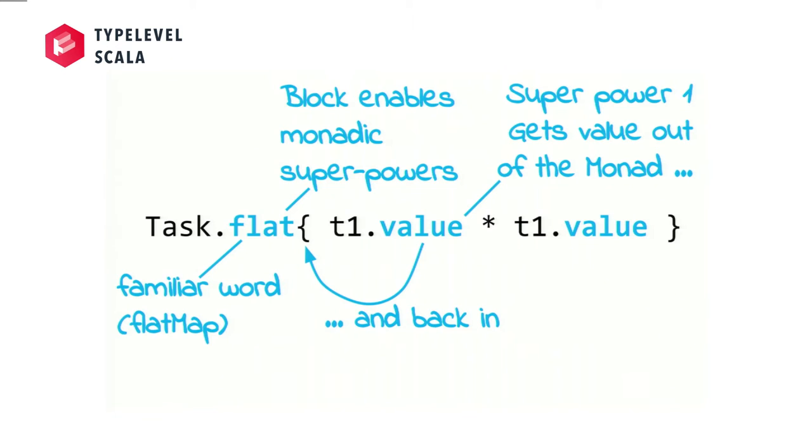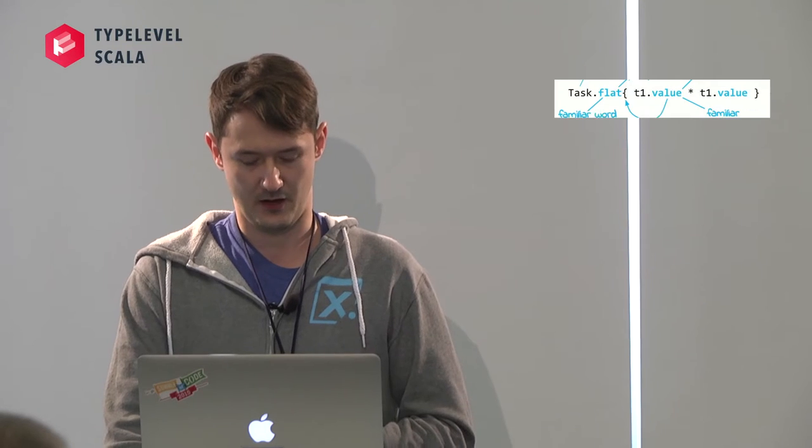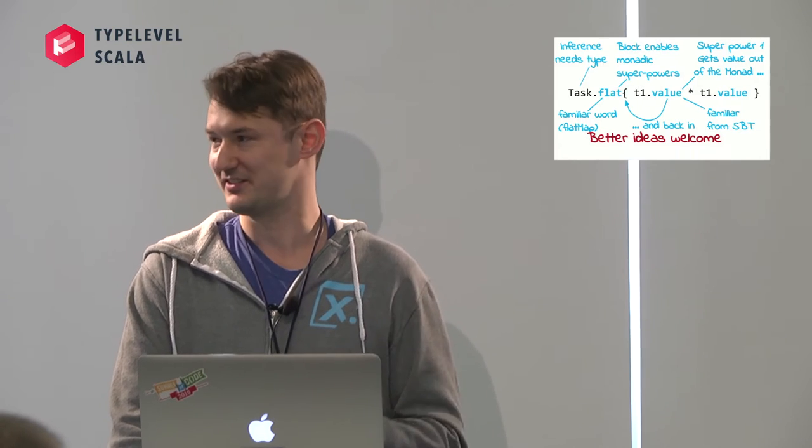And we use the word flat, because, well, we could have called monadic or something, but ideally, we want it to be used by people who don't really know what a monad is. Then, flat is kind of more familiar. That value is also familiar from SBT. Maybe we come up with a shorter name. It's kind of a bit long. And, well, task needs to kind of be there, because it needs, Scala needs it for the type inference. That's at least in our implementation. All right. Well, better ideas will come, of course.